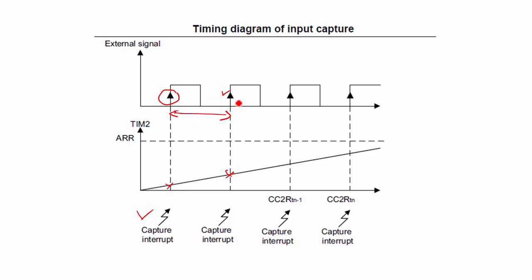This is the mechanism used in order to calculate the time period or the frequency of the applied signal to the input channel of the timer. Let's see how we can do this by using code. Let's get into our IDE and start coding.